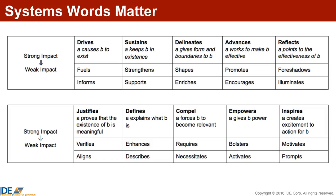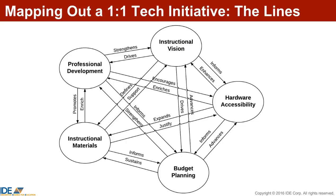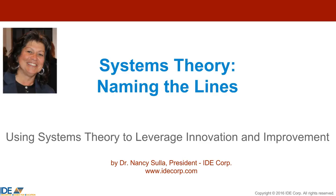Take a look at some more triplets of systems words that you might want to use. There are no absolute right words in systems diagrams — use what works for you. You may look at this list and see the relationship somewhat differently, or have more words to add. As you develop your systems thinking, the words will come more easily. Spend some time reviewing all of the interrelationships built into this section of the systems diagram for a one-to-one technology initiative. You may want to pause the video at this point to study it further. Now it's time for you to define the lines in your own systems diagram. Have fun!